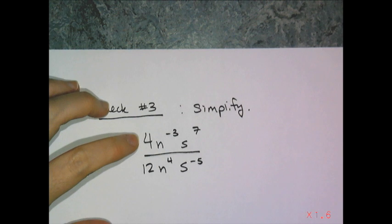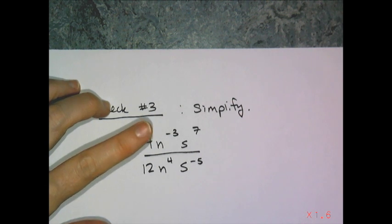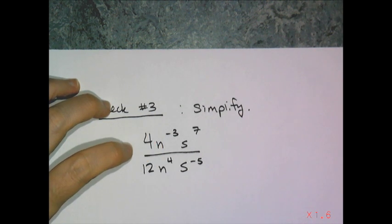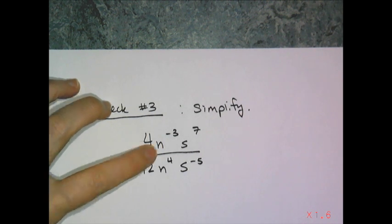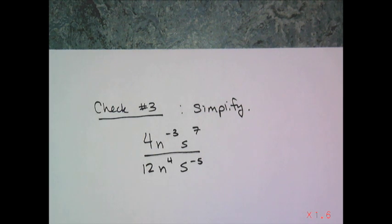Simplify 4n to the negative 3 times s to the 7th, divided by 12n to the 4th times s to the negative 5th.